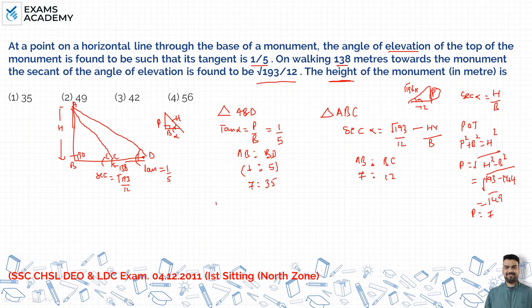CD value is 138. CD is directly given. This value is not directly given. If we subtract the values, then yes or no? We will subtract here. Then we write BD. BD is how much? BD is CD minus BC.